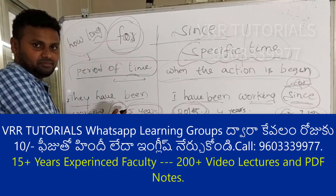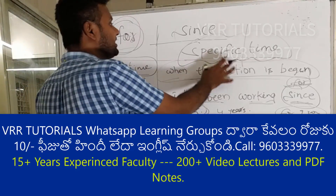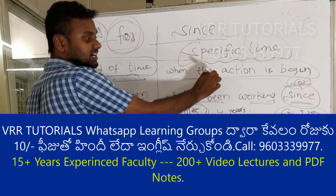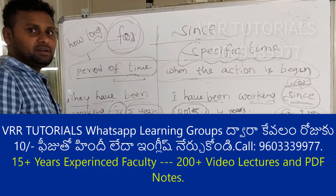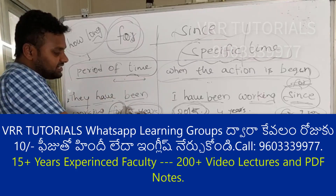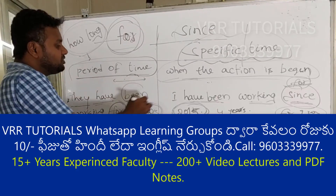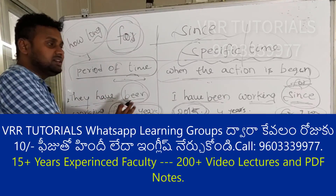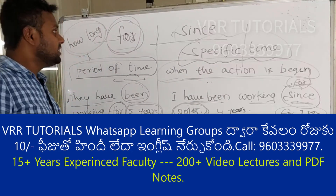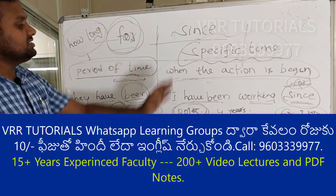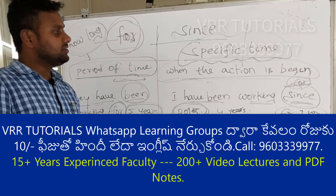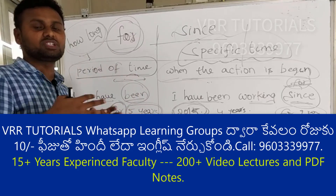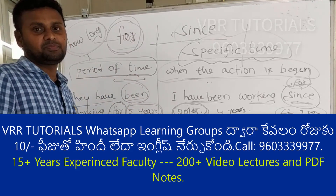So to summarize: 'for' is used with a period of time, and 'since' is used with a specific point in time when the action began. This is the difference between 'for' and 'since'. If you are confused, you can repeat and watch this video. If you have any queries, please post in our query group. Thank you for watching.